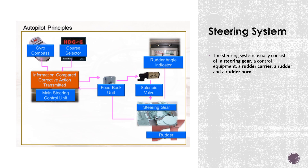The steering system usually consists of a steering gear, control equipment, a rudder carrier, a rudder, and a rudder horn. The steering gear provides movement of the rudder in response to a signal from the bridge transmitted from the autopilot. The control equipment conveys the signal of the ordered rudder angle from the bridge and activates the steering gear to move the rudder to the desired angle.